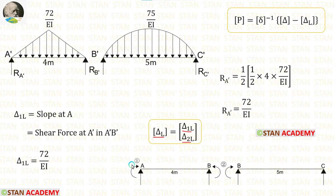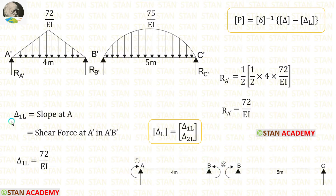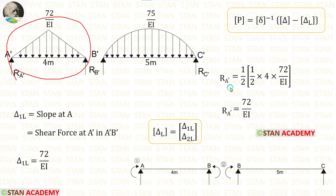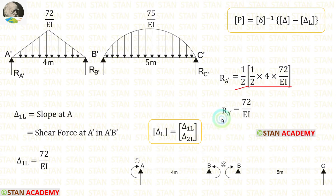The first value should be calculated from the first coordinate and the second from the second coordinate. Let us calculate delta 1L. For that we have to find RA'. This is a symmetrical diagram, so RA' will be equal to the area divided by 2. Using the formula for the area of a triangle — half times breadth times height — divided by 2, we get RA'. For delta 1L, let us apply the value of RA'.